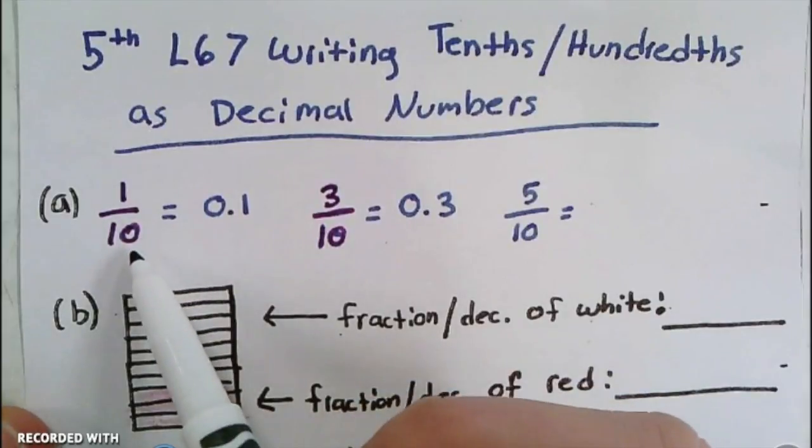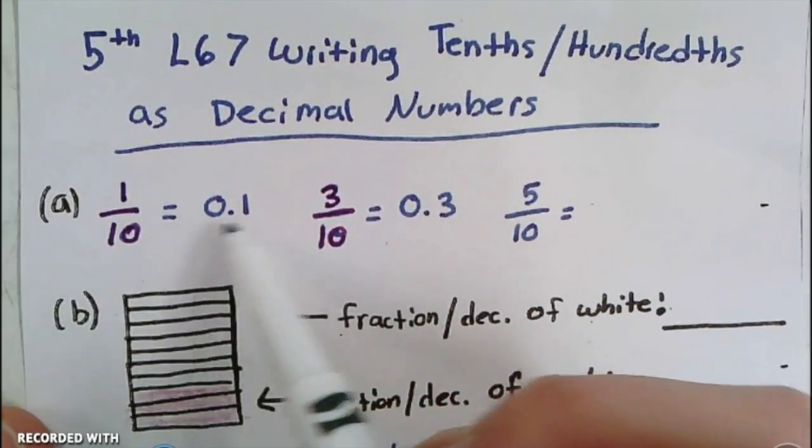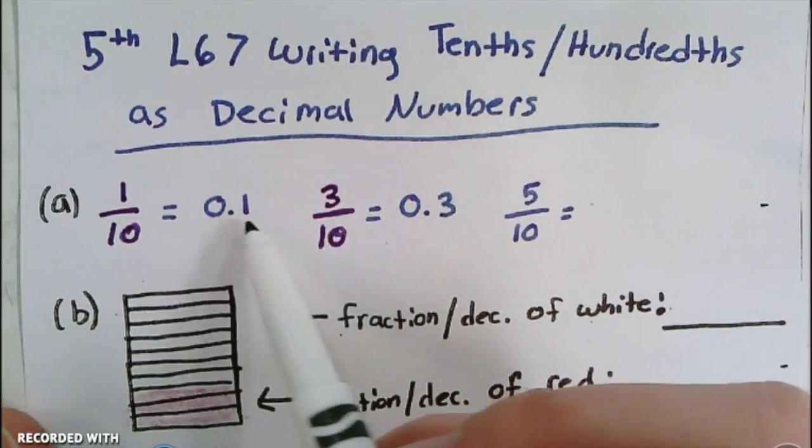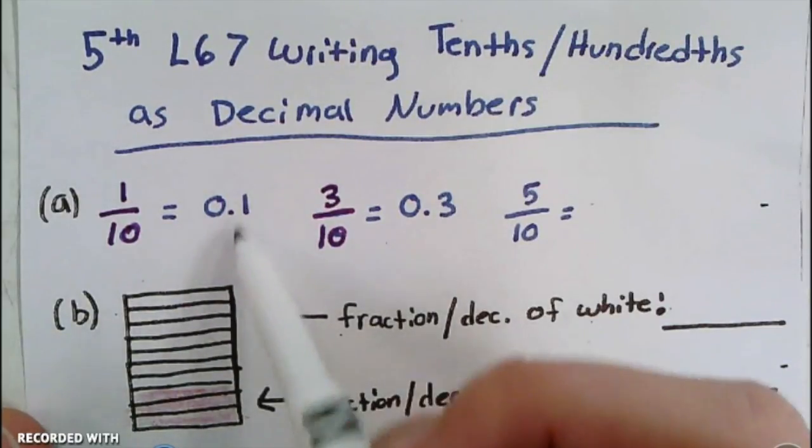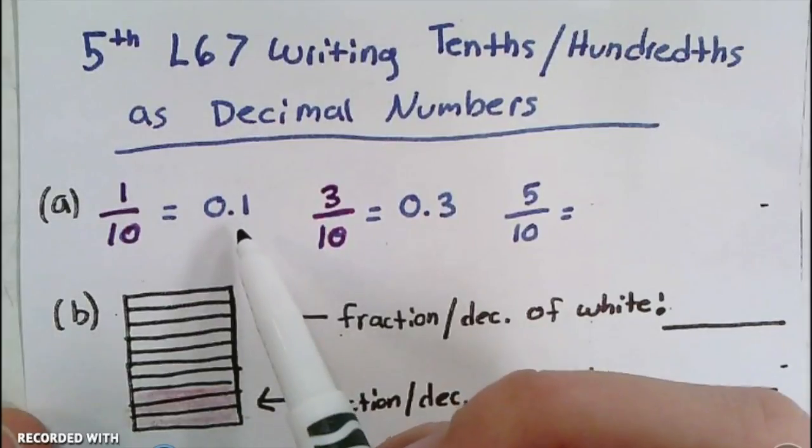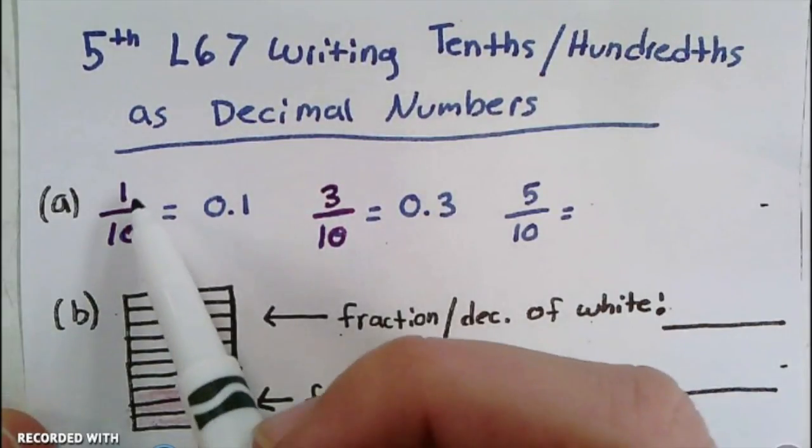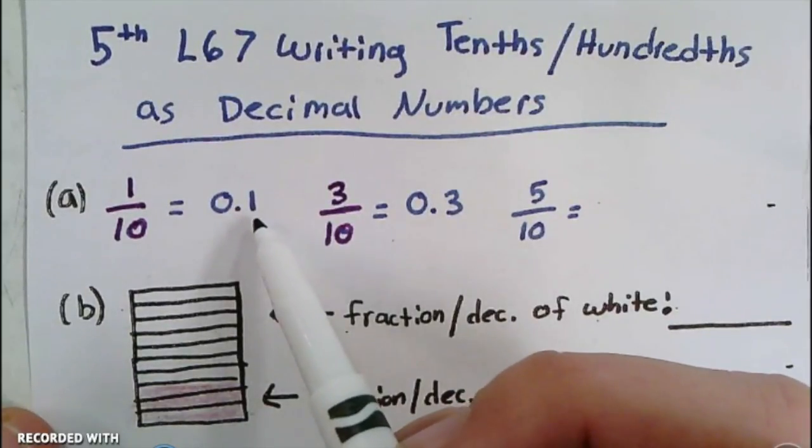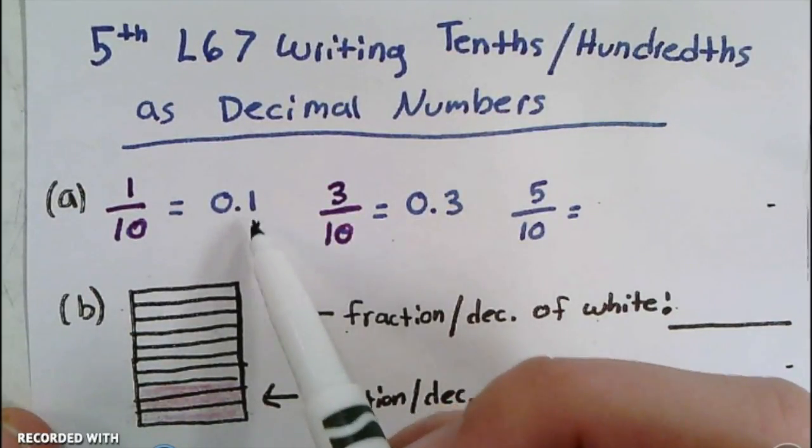we say one-tenth. If we were to write that as a decimal number, what we've been talking about the last few days is that this first place on this side of the decimal point is called the tenths place. So this is one-tenth, and 0.1 is one-tenth because there's a 1 in the tenths spot.